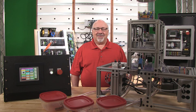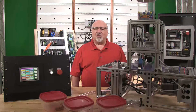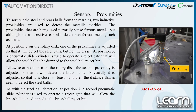Two inductive proximities are used to sort the steel and brass balls from the marbles. Although normally used to sense ferrous metals, they can also detect non-ferrous metals such as brass, just not as sensitively. It is this property that is used to sort the steel balls from the brass balls. At rotary disk position 2, the first proximity is adjusted so it can detect the steel balls, but the brass balls go by undetected. At position 6, the second proximity is adjusted closer to the rotary disk so it will detect the brass balls. Pneumatic slide cylinders at the next position after the two proximities are used to reject the steel and brass balls into a tube that takes them to a sorting bin.